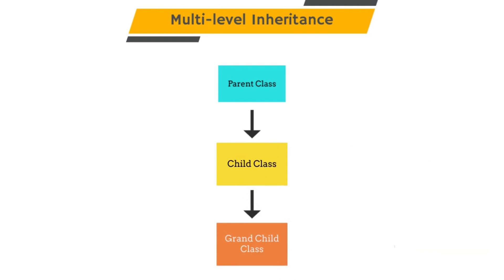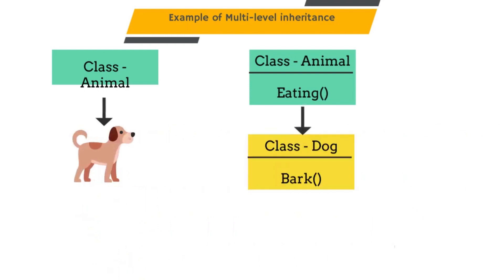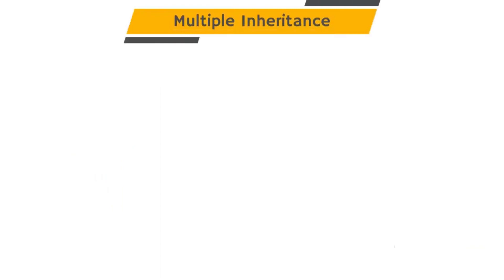The second type is multi-level inheritance. In this type we have a child class of a child class — we can go up to N levels. Parent class properties can be used by the child class as well as the grandchild class. For example, consider a parent class Animal with a function called eating. We create a child class Dogs which inherits Animal and has a function called bark. We then create a child class BabyDog which inherits from Dogs — BabyDog can use both the eating and bark methods.